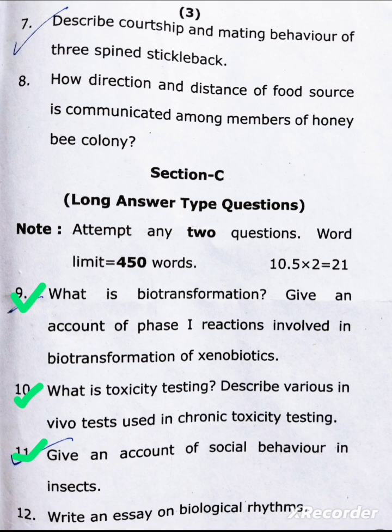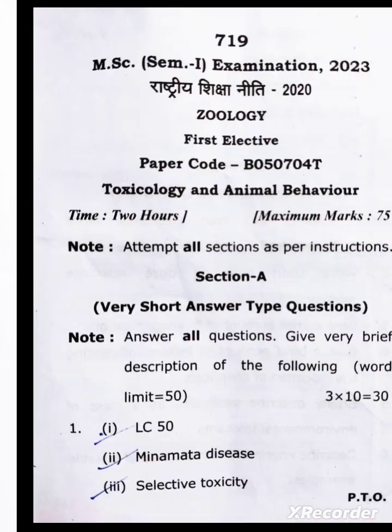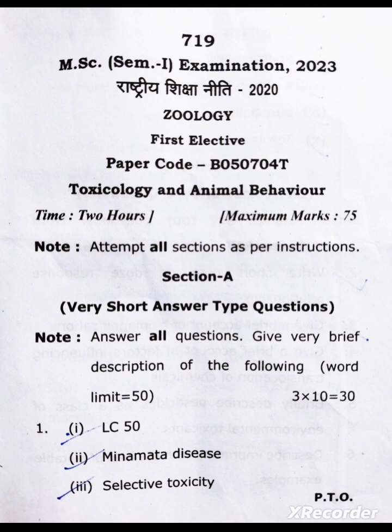Q11 — Give an account of social behavior in insects. Q12 — Write an essay on biological rhythm. That completes the question paper. This is the fourth paper video in our series. You can search our MSc playlist where the first, second, and third question papers are also available. Thank you.